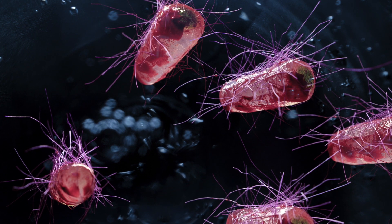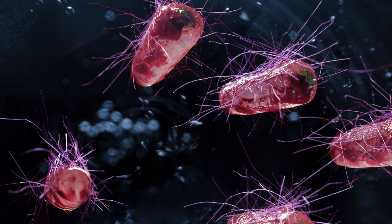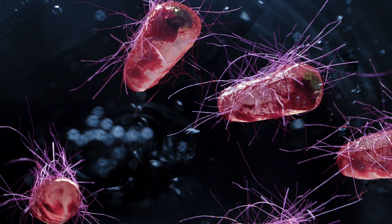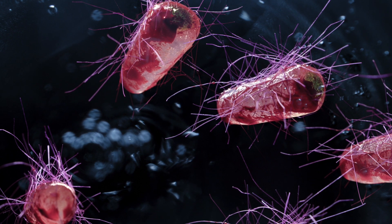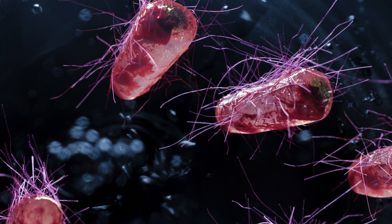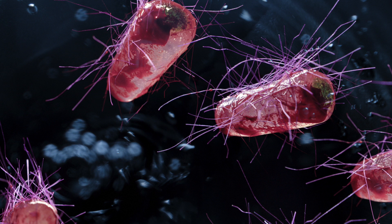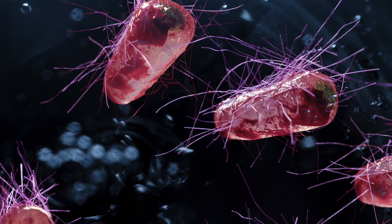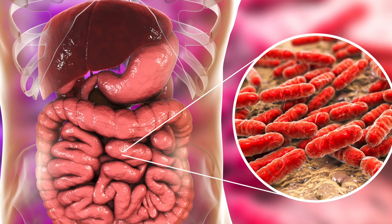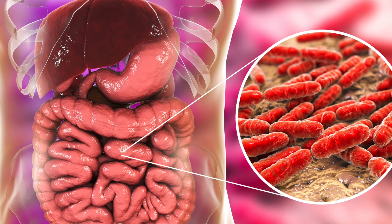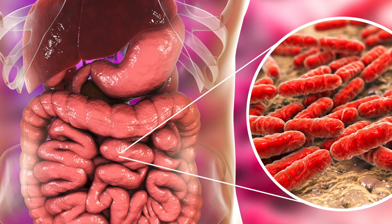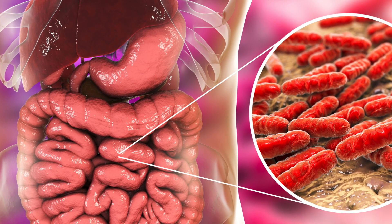E. coli is a gram-negative rod. It is a facultative anaerobic. It is a chemo-organotroph — things we have discussed in previous videos. E. coli is an interesting organism because not only can it be a pathogen, but it's also part of our normal flora, our normal microbiota. You can often find E. coli lining the digestive systems of human beings and other animals.